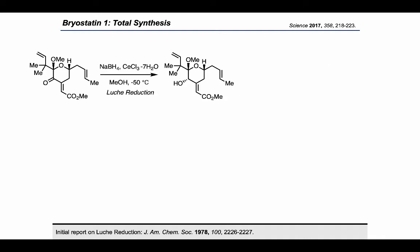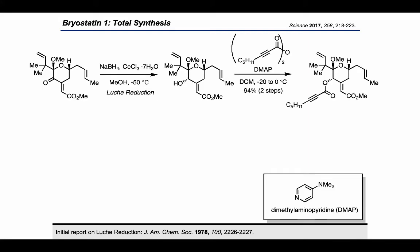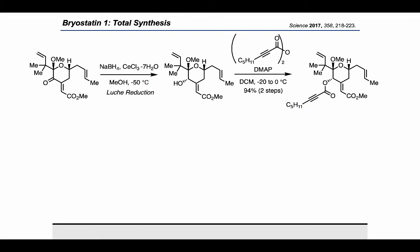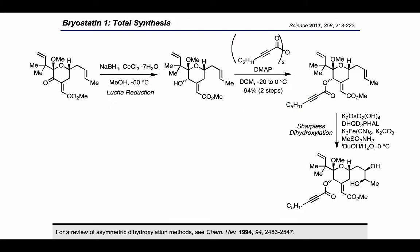Treating the enone with sodium borohydride and cerium trichloride heptahydrate allowed a Luche reduction, where Lewis acid activation of the ketone by cerium was used to disfavor conjugate reduction. Then, acylation with an anhydride bearing an alkyne resulted in the formation of an ester on the secondary alcohol. The virtue of installing the alkyne is that it acts as a masked version of the diene in the final product, while avoiding side reactions — for example, the next dihydroxylation step, which might have been difficult to do chemoselectively if a diene had been installed instead.